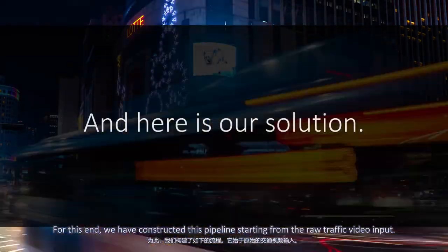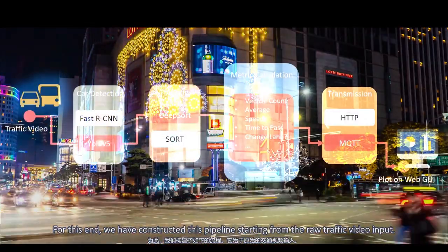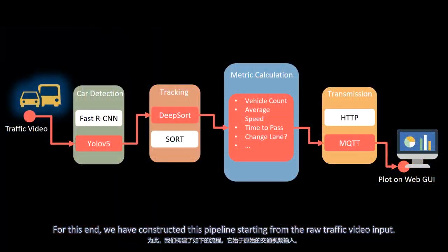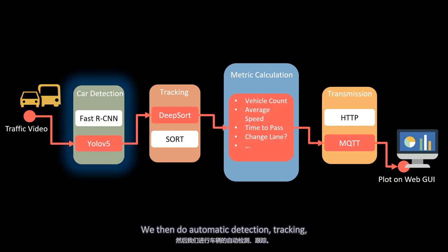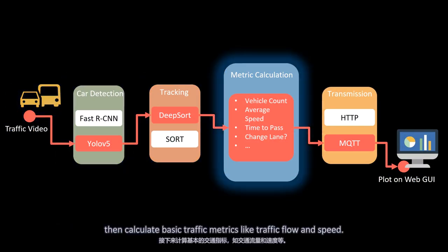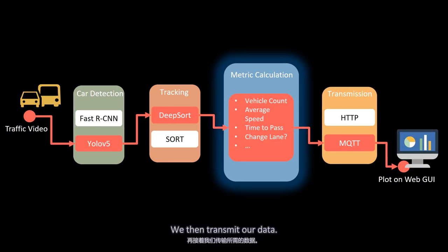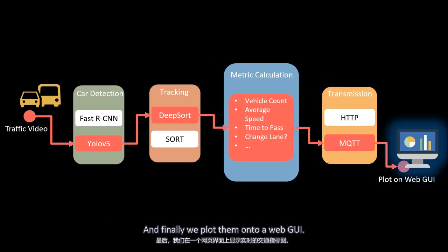For this end, we've constructed this pipeline starting from the raw traffic video input. We then do automatic detection, tracking, then calculate basic metrics like traffic flow and speed. We then transmit our data, and finally, we plot them onto a WebGUI.